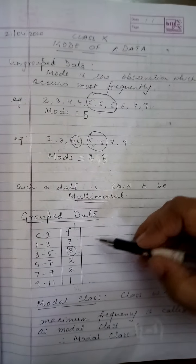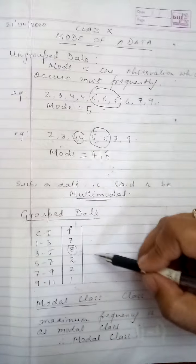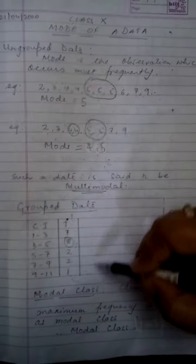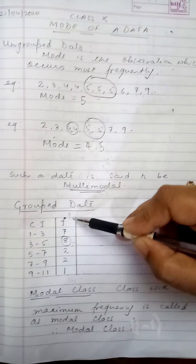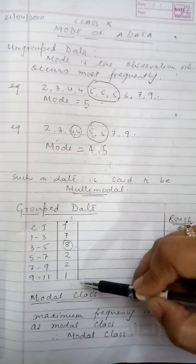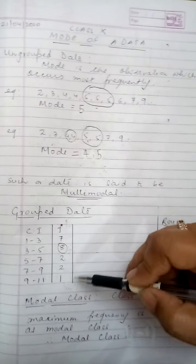So that is where mode is being used. Now moving on to class 10th that is grouped data, here when you come to calculation of mode there is no asset table work involved. You will be given the class intervals, you will be given the frequencies, but before you move on to find out the mode of a given data the first step or the first thing that you have to do is you have to find the modal class.